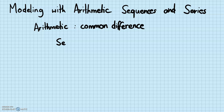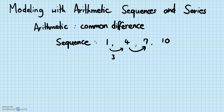For example, if we start with one and the common difference is three, the next terms are four, seven, ten — it increases by the same number each time. By sequence, we mean we're just listing the numbers, whereas series is the addition of all those numbers.